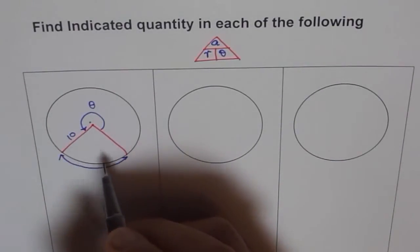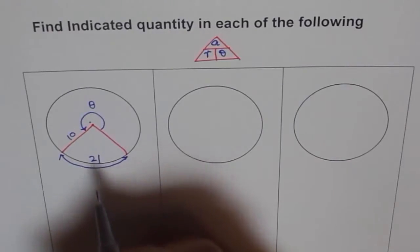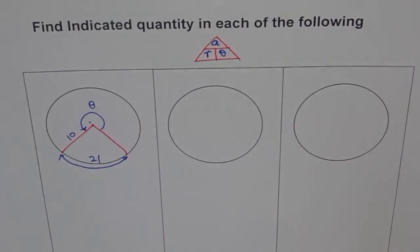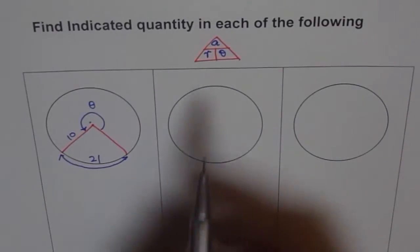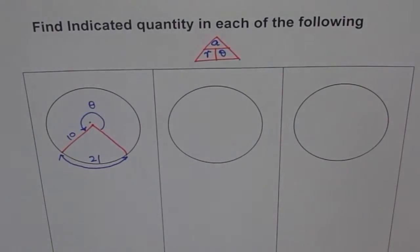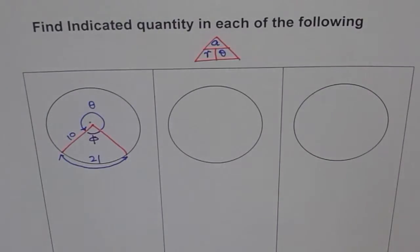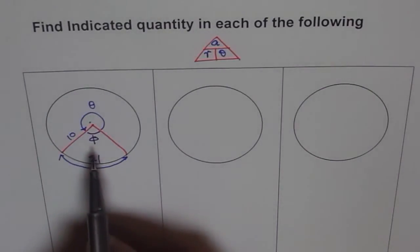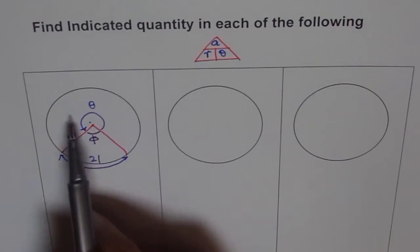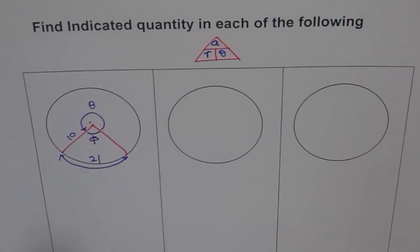And the length of this arc is, let us say 21. And you find theta. How will you do it? Well, using this relation, we can always find inside angle. Let us say this is phi. So and then after calculating this, we can take away this angle from 2 pi and get theta. That is the strategy.